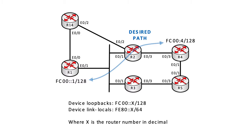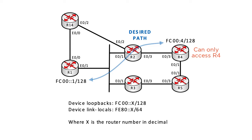Our problem is that we're trying to do a web download from R1 to R4 but it's not working. R14 was recently hardened and turned basically into a network firewall. Right now we only get access to R4 and we need to find some way that we can troubleshoot this entire network even though we can only access one device. I've labeled the interfaces on here to make it easier — you may want to take a snapshot of this as a quick reference.